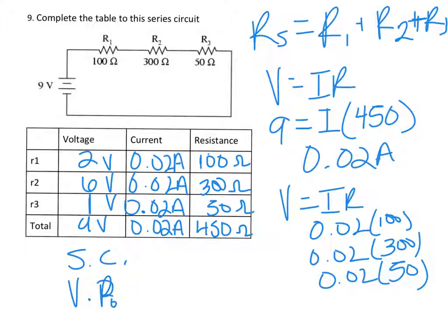That our current stays the same through each resistor. So that's why it's 0.02 all the way down. And then we used Ohm's law again to find our voltage for each, which was these values multiplied by each other. And then we've got 2, 6, and 1, and those actually add up to give us 9. So that's kind of a way of checking yourself.